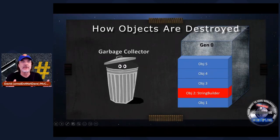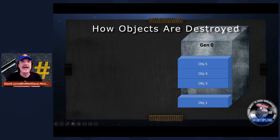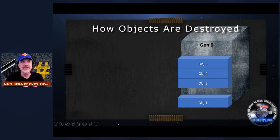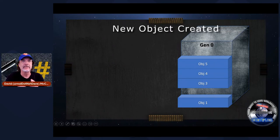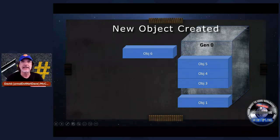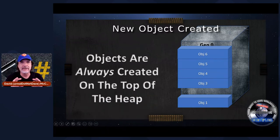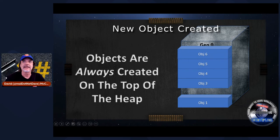At some point, the garbage collector wakes up and goes, 'I've got to clean up some of these objects.' It looks at the pointer tree, finds all the objects that don't have a pointer to code anywhere, and then removes that object out of memory. And if you created a finalizer in your object, there's a different process involved too. Then what happens when you create another object — a string or StringBuilder — it's created on the top of the heap. It doesn't create it in position two where the old StringBuilder was. It always creates it at the top of the heap. That's why you can spin up thousands of objects in milliseconds in .NET — it's very, very performant.